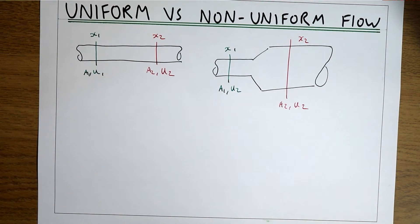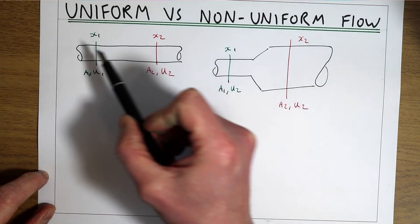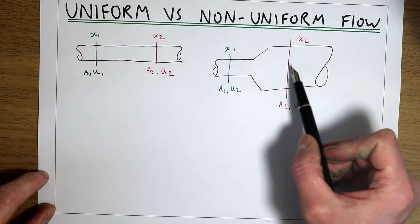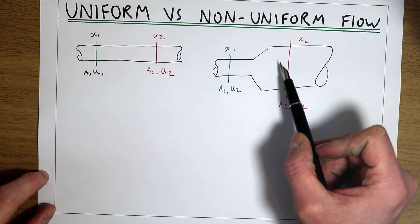So if our flow parameters are the same at two points along the pipe, then the flow is uniform. If they're different between two points on the pipe, then it's non-uniform.